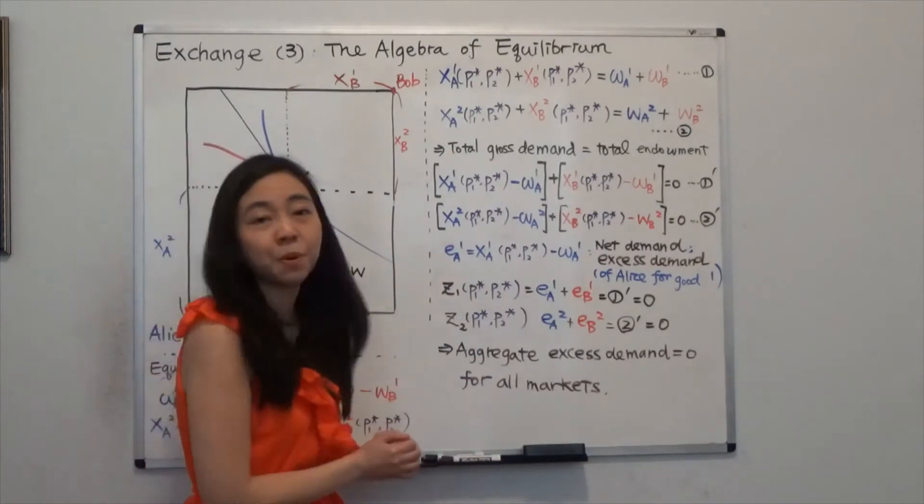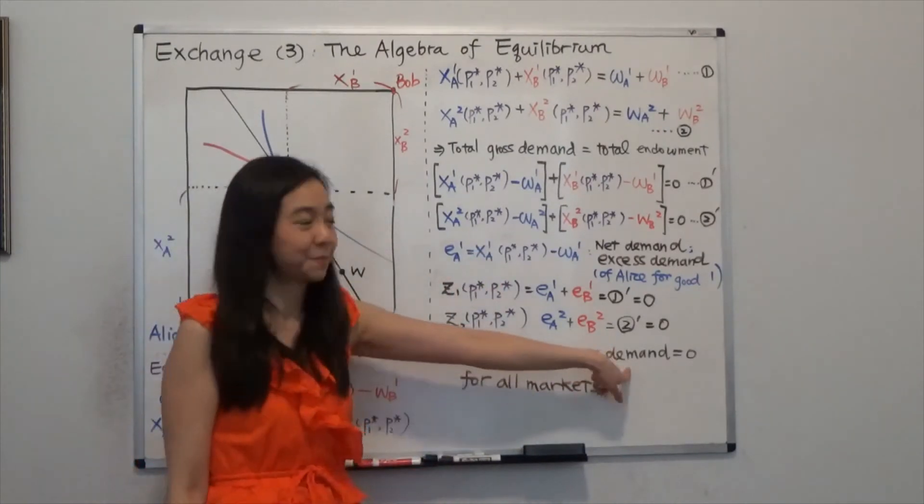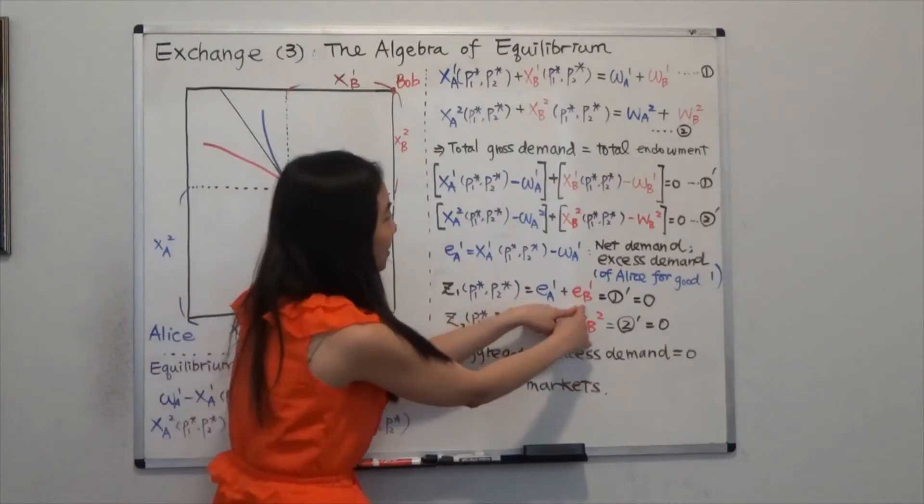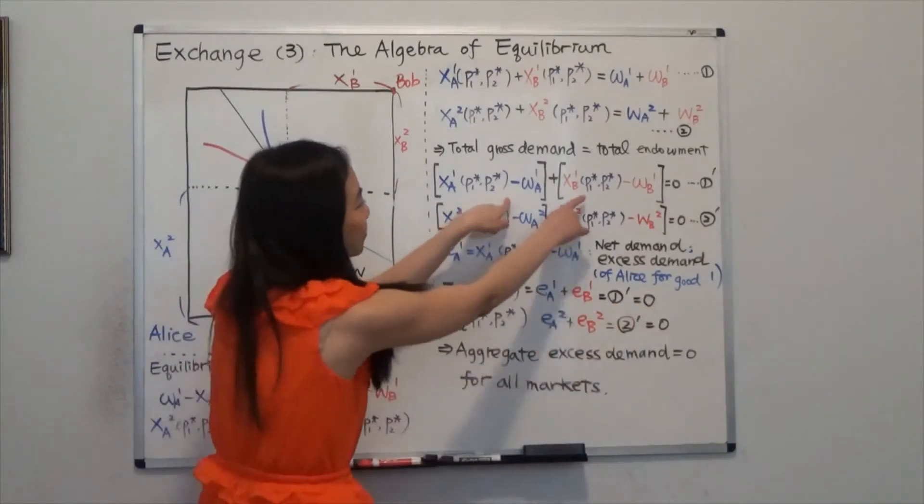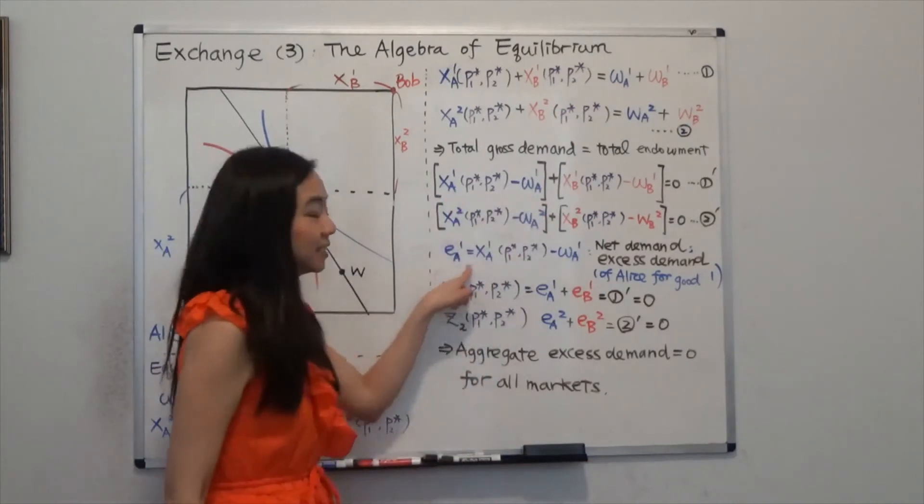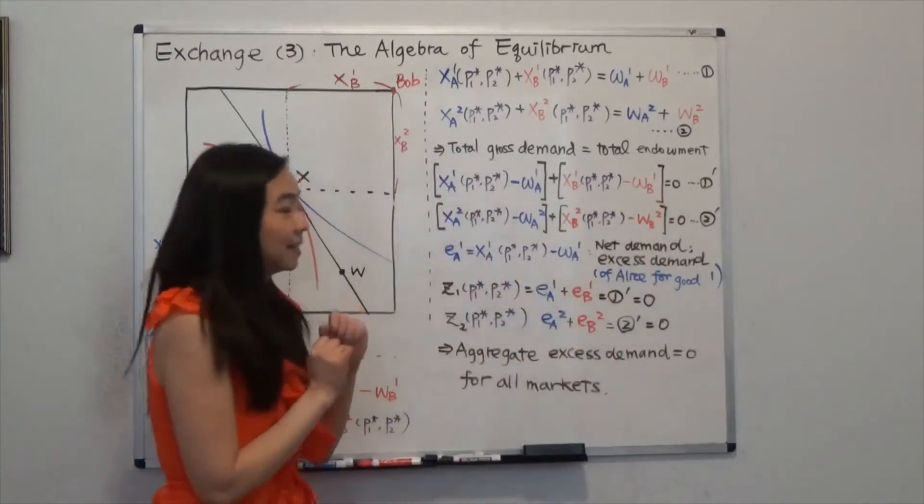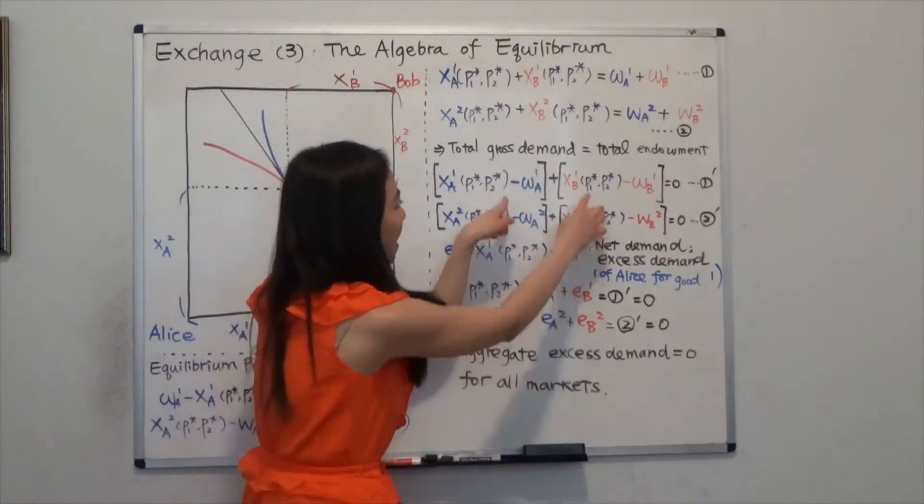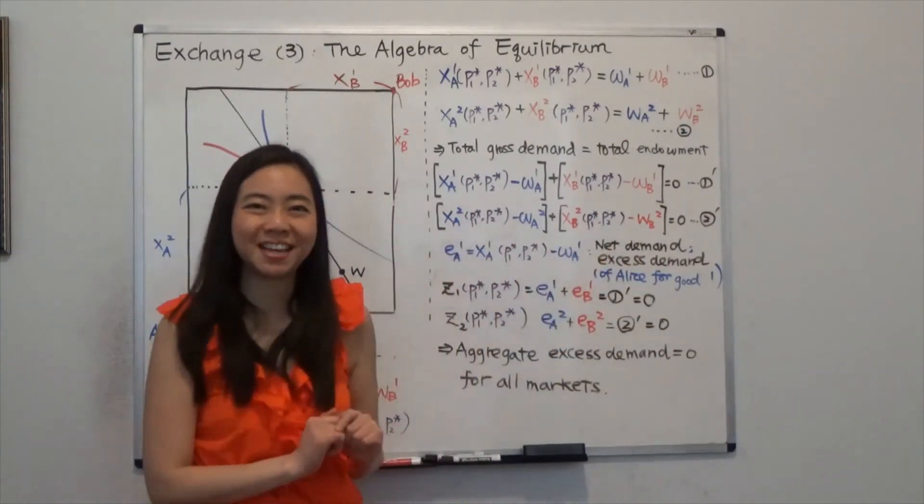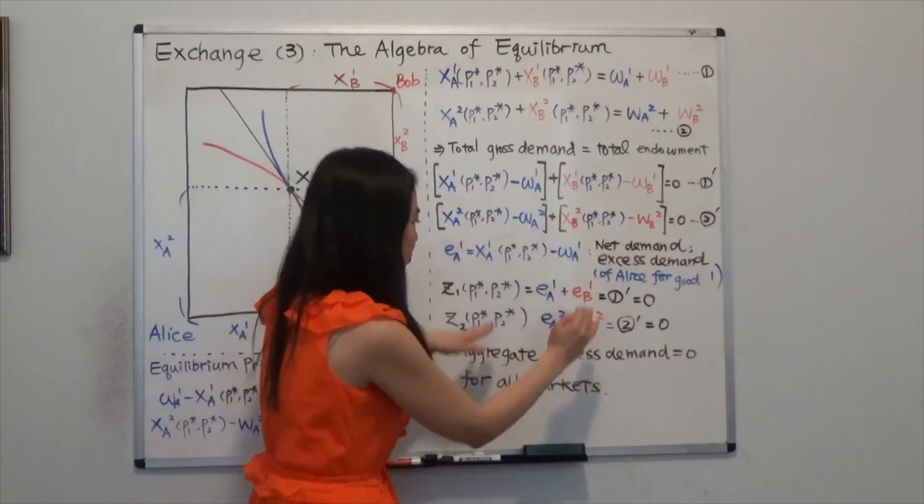Now, we're going to sum up the excess demand for both of these consumers. So we call that aggregate excess demand. Now aggregate excess demand for Alice and Bob for good one, notice that when you sum them up, it is going to be zero. How do I know that? Well, it's from equation one prime. Notice your equation one prime. This guy is exactly equal to the excess demand of Alice of good one. And this term is actually equal to the excess demand of Bob for good one. So you sum them up, you get zero. And that's from your equation one prime. And same for equation two prime. It tells you that given this equilibrium price, your aggregate excess demand for good two is going to sum up to zero.